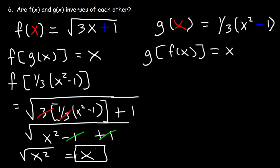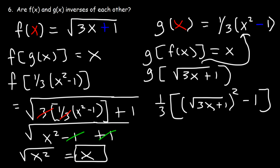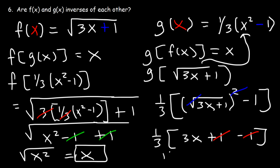Now let's move to the other side. Let's replace f of x with the square root of 3x plus 1 and plug it into the equation. So it's going to be 1 third, and instead of writing x squared, we write square root of 3x plus 1, squared, minus 1. The square and the square root cancel, leaving 3x plus 1, and then we have a minus 1 outside. 1 minus 1 adds up to 0, so what we have left is 1 third of 3x, which equals x. Therefore, f of x and g of x are inverses of each other.